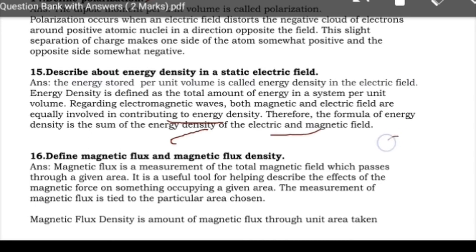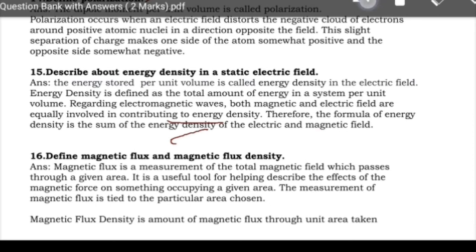Next: define magnetic flux. Magnetic flux is the total number of magnetic flux lines passing through a given area. Flux density B = φ/A, meaning flux per unit area is known as magnetic flux density. The unit for magnetic flux is Weber, and the unit for magnetic flux density is Weber per meter squared, also known as Tesla.